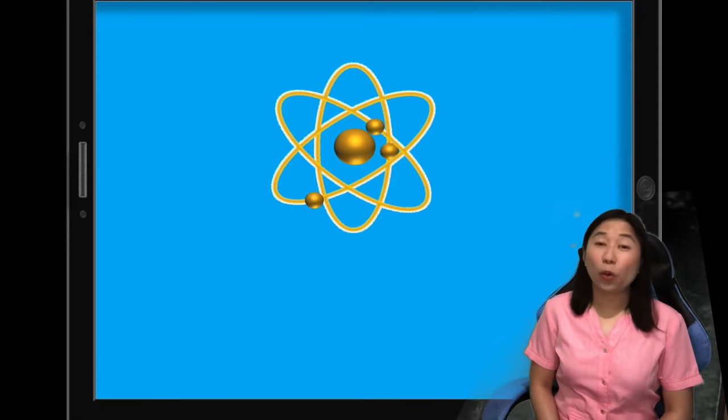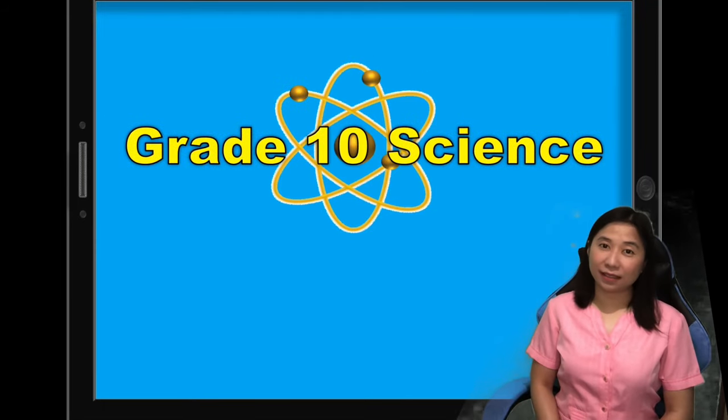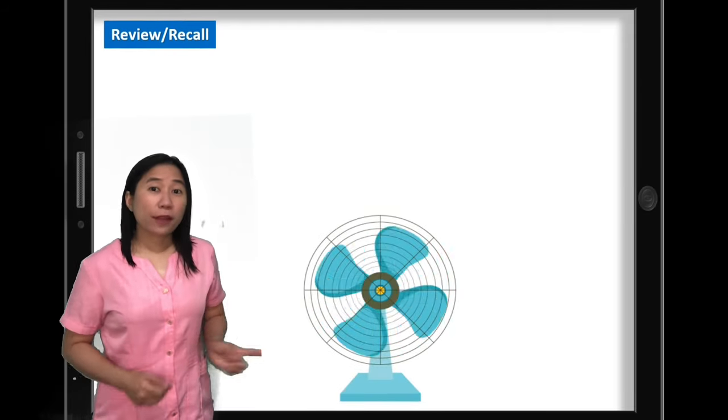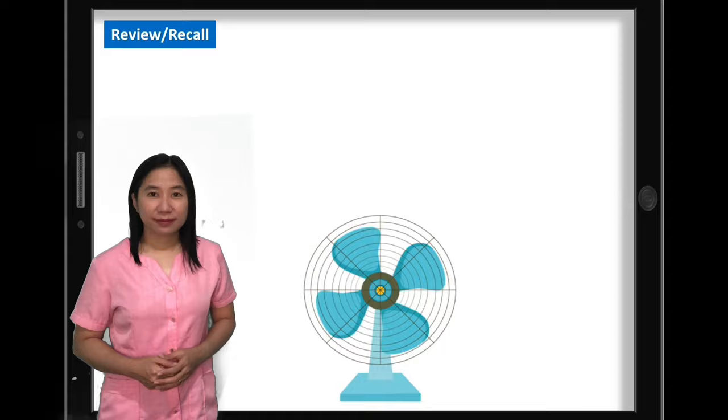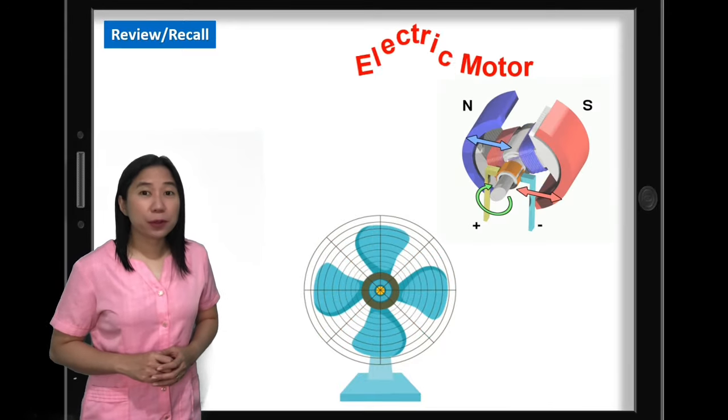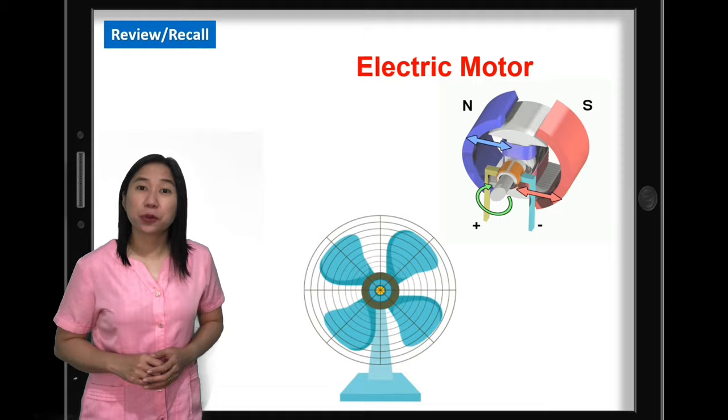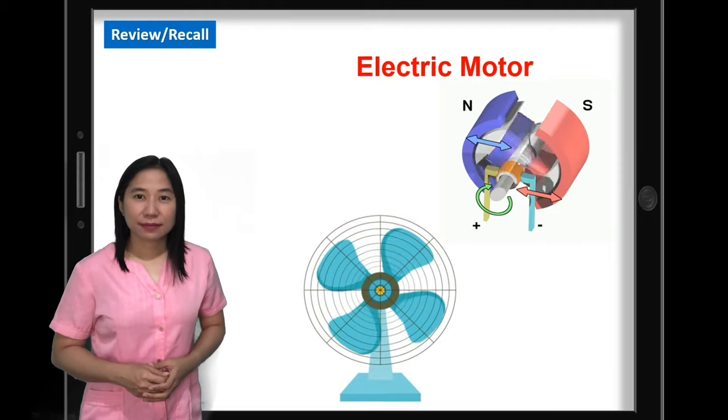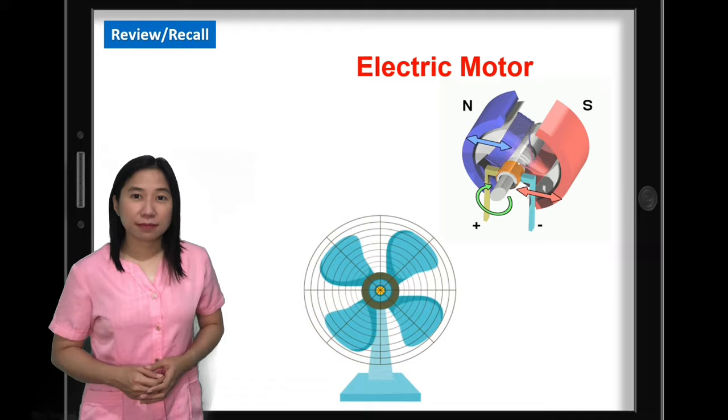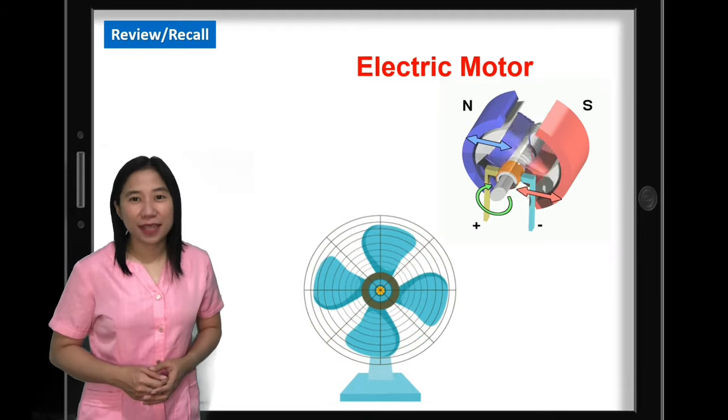Hello students! Welcome to grade 10 science lesson. I'm your teacher, Ma'am Marian Soriano. Have you ever wondered why a fan is rotating? This is because there's an electric motor inside the fan that makes it rotate. But what's going on inside the motor that makes the fan rotate? Let's find out in today's lesson.